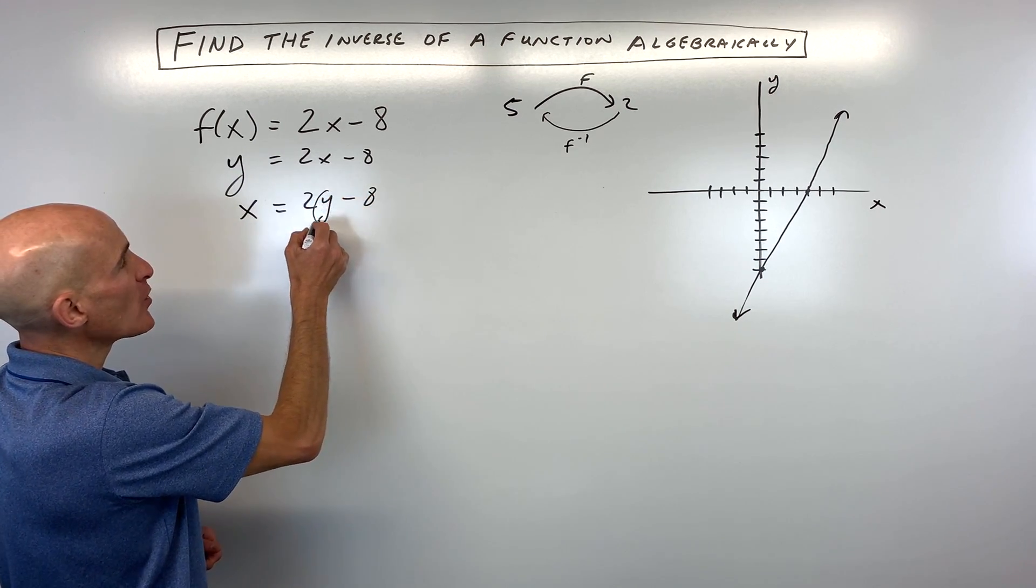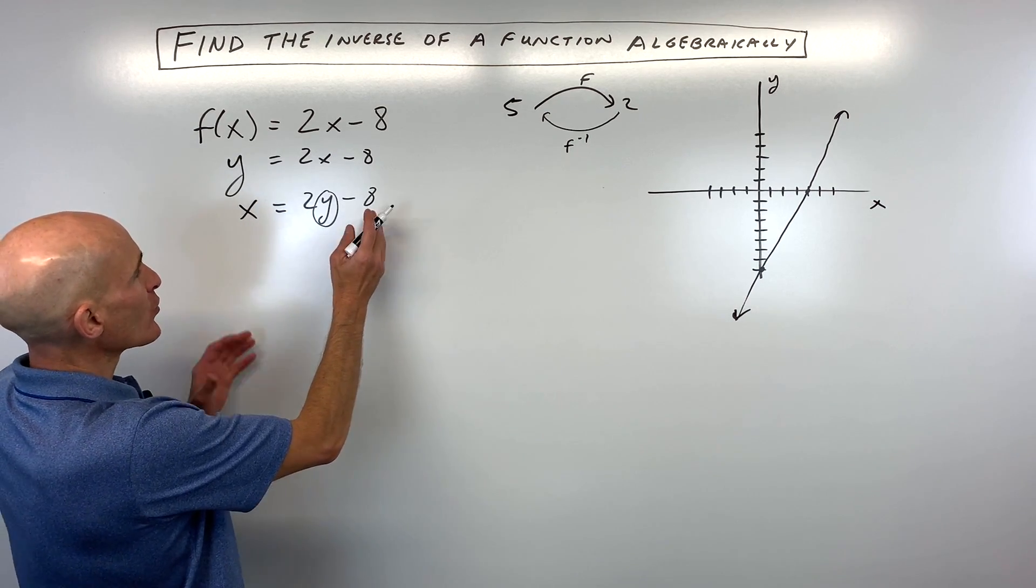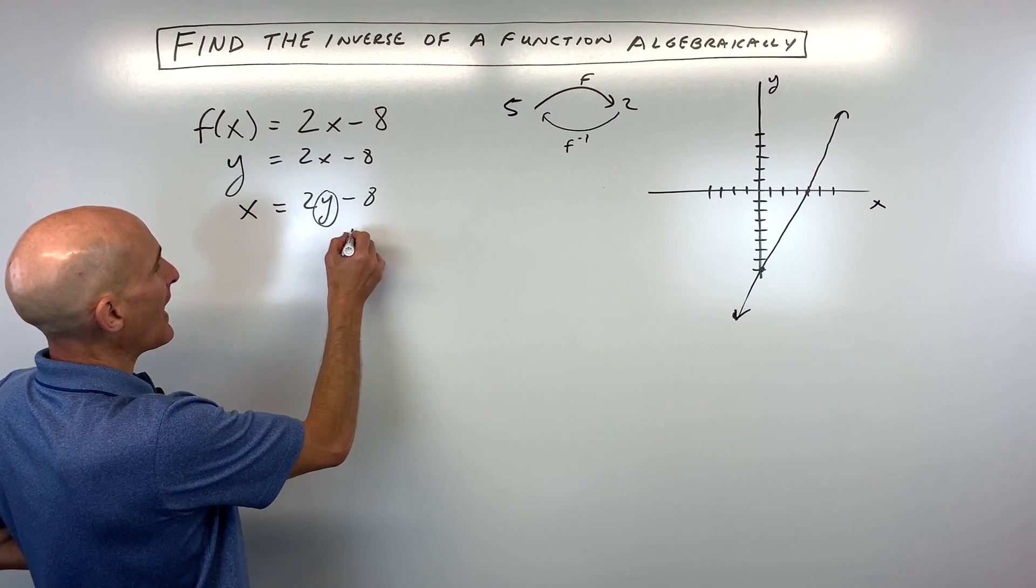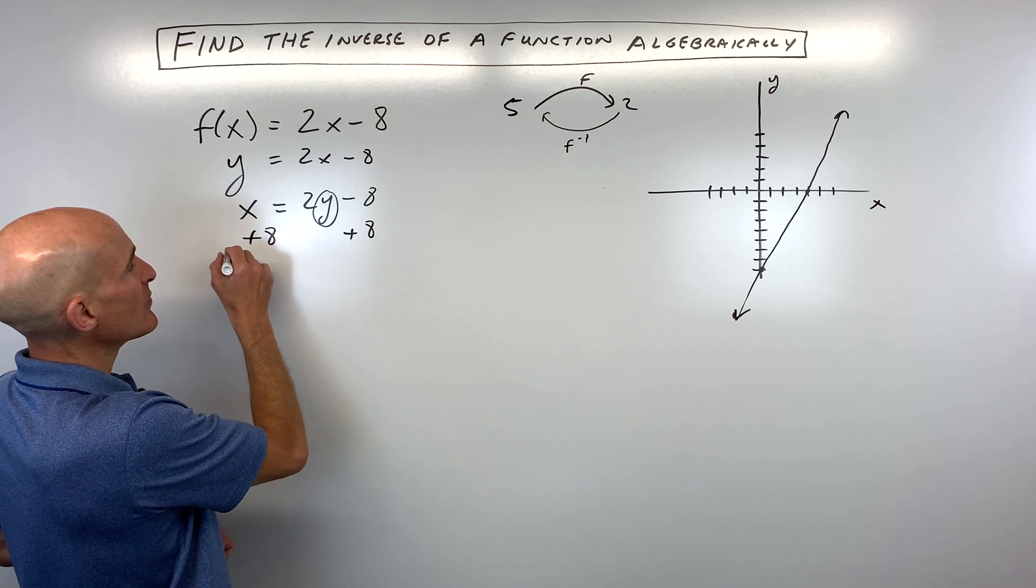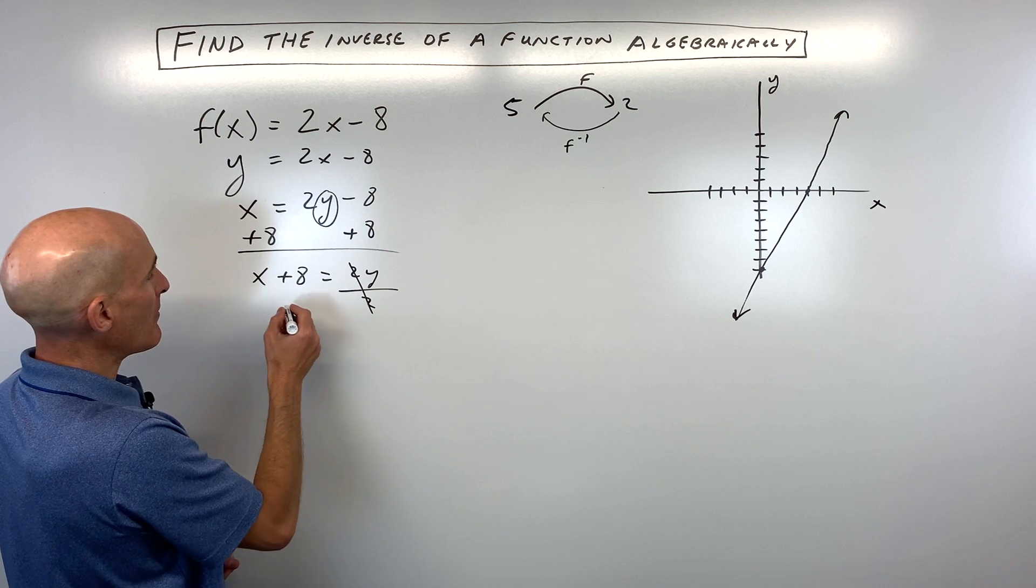And then what you want to do is solve for that new y. You want to get that new y by itself. So what we're going to do is work from the outside in towards this y. I'm going to add 8 to both sides. Keep it balanced. And then we're going to divide by 2 to get y by itself.